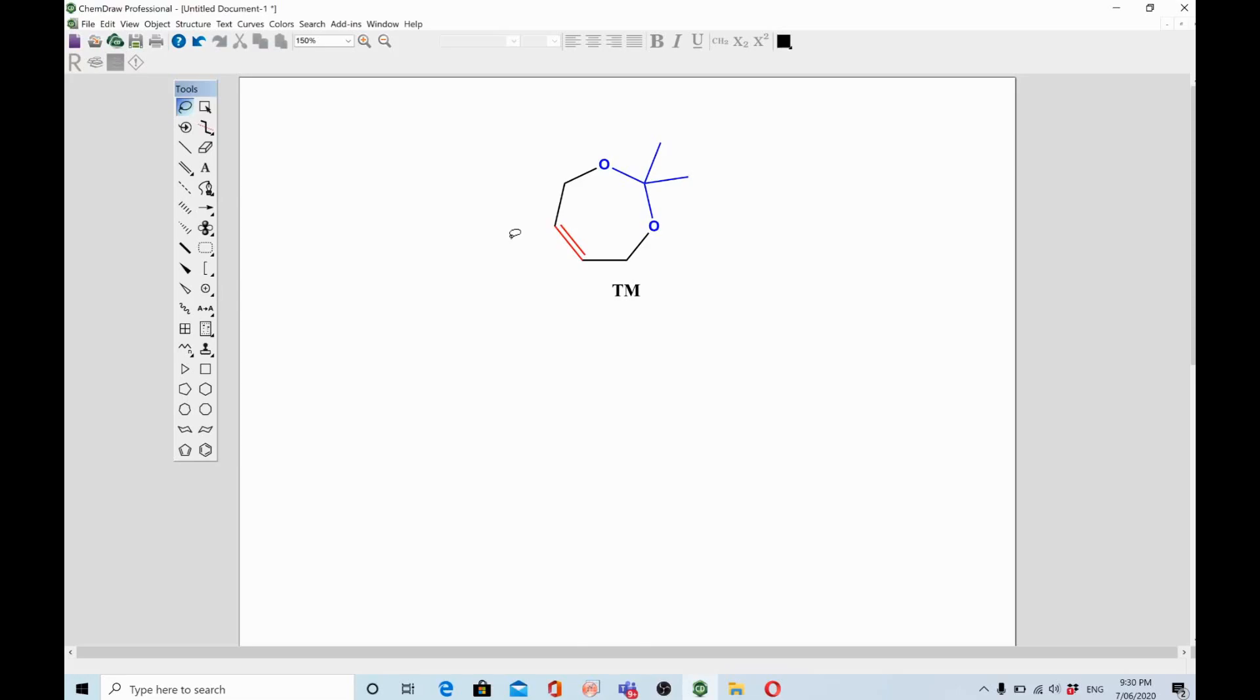This is our target molecule which contains two functional groups I have highlighted with blue and red color. The blue color is called acetals and the red color is alkene. When we do analysis of this compound we will disconnect both of the functional groups in such a way to reach our target compound.